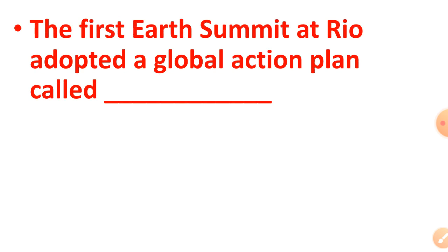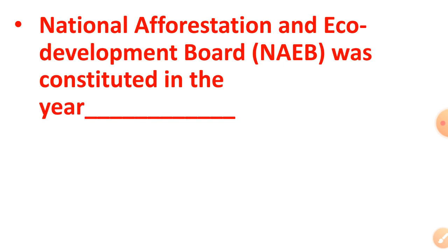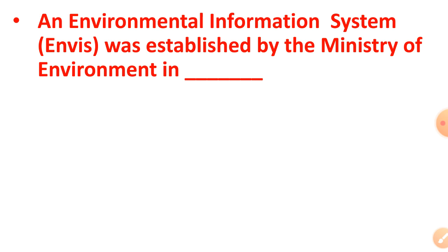The first Earth Summit at Rio adopted a global action plan called Agenda 21. The National Afforestation and Eco-Development Board was constituted in the year 1992. An Environmental Information System was established by the Ministry of Environment in the year 1982.